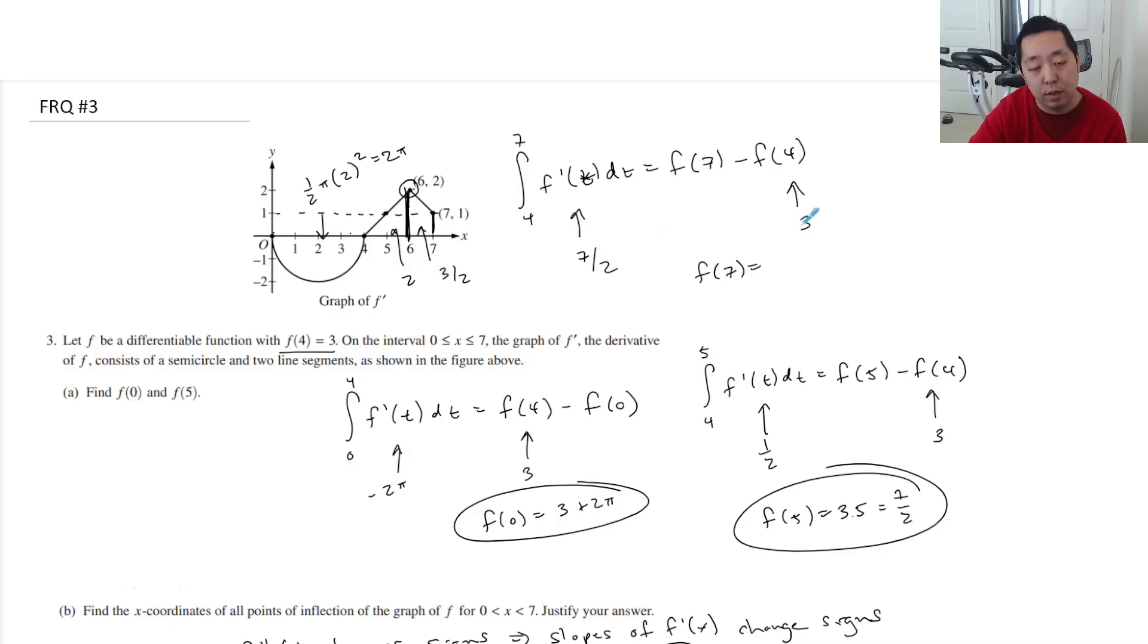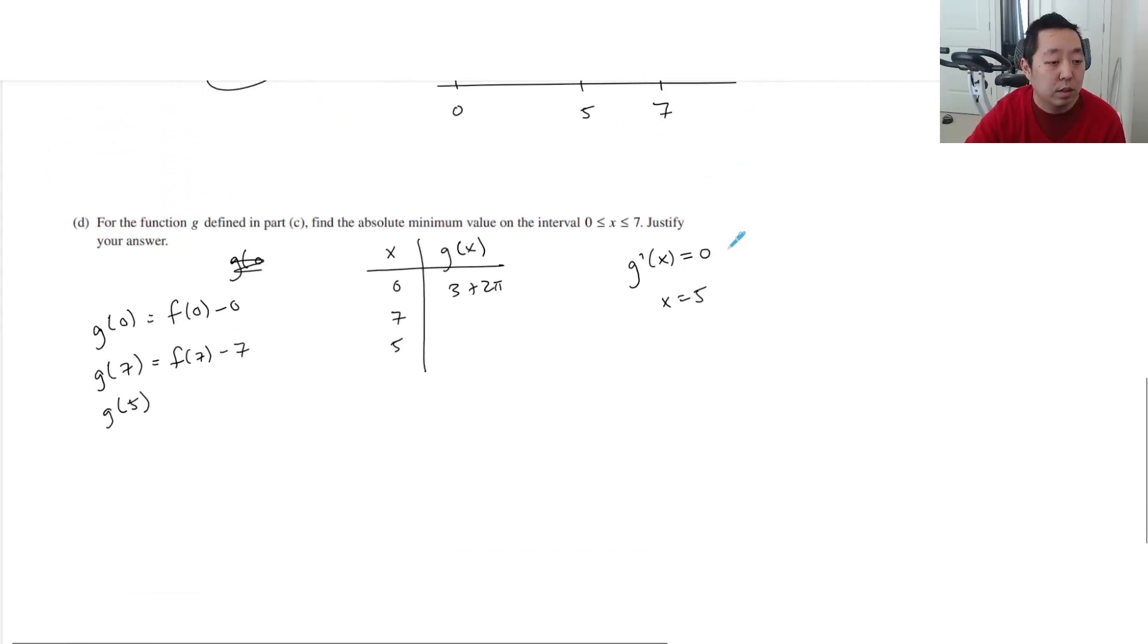I just want to write it out. 6 over 2, that would be 13 over 2. So this would be 13 over 2 minus 7, which is 14 over 2, or negative 1 half. So this is negative 1 half.